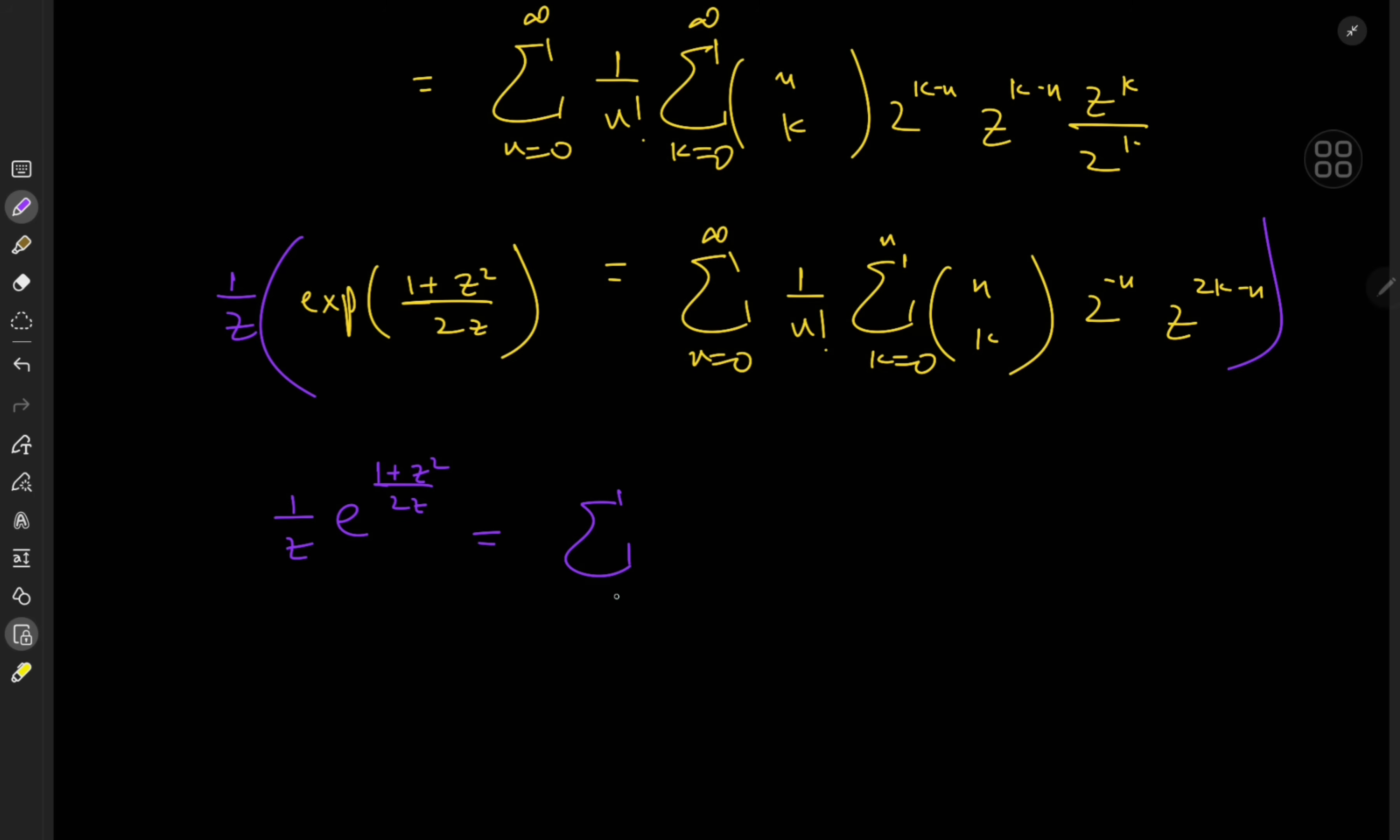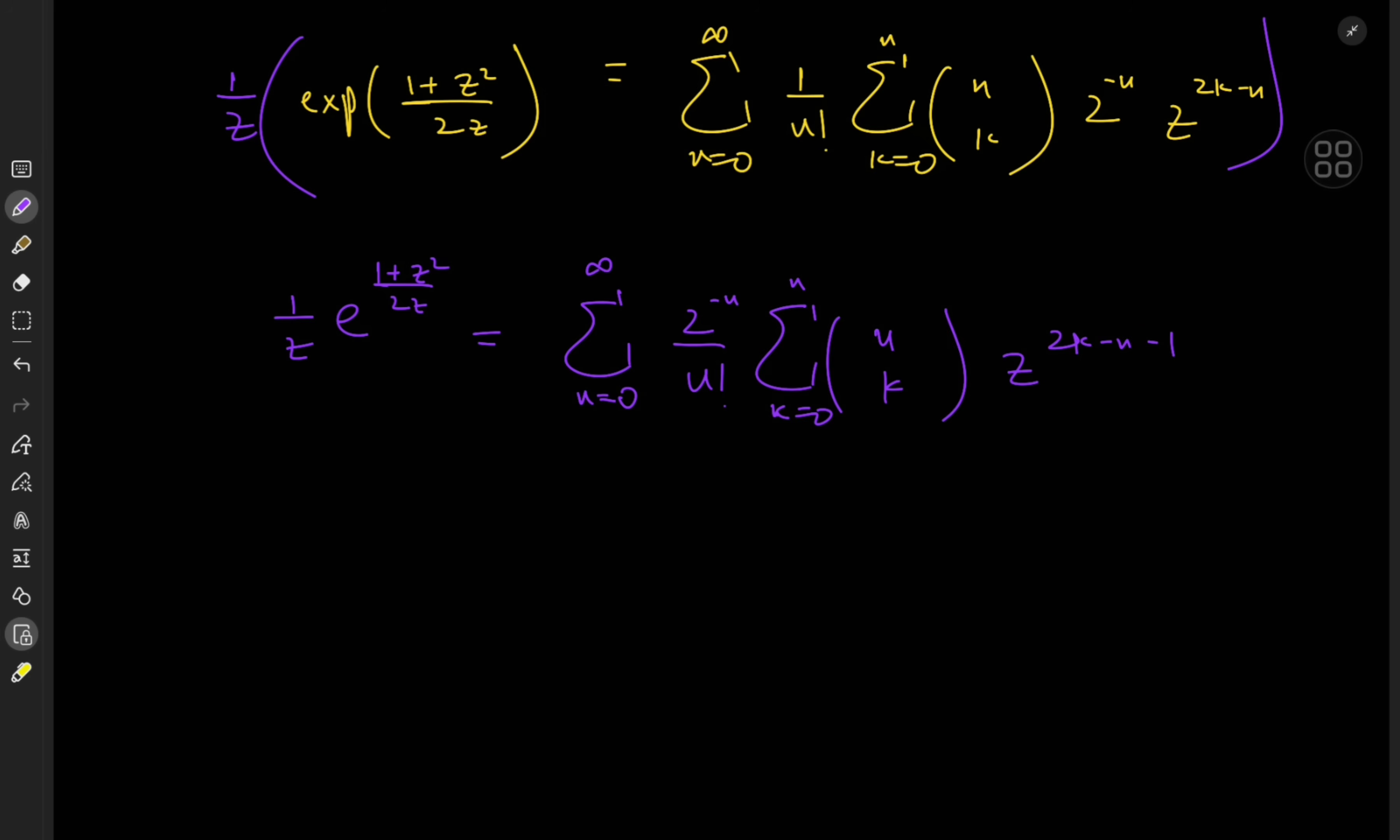So that we have (1/z)·e^((1 + z²)/(2z)). And this thing equals the sum over n from 0 to infinity of 1/n!, sum over k from 0 to n, n choose k, 2^(-n), which of course is independent of the index variable k, so we'll take it outside here. And we have z^(2k - n - 1). That was cool. And we started off with one exponential function in z times 1/z. And now we have this infinite series involving binomial coefficients, sums of them as well, and monomials in z. So we've gone from a relatively simple looking integrand to a much more complicated one, which, judging by the history of all the integrals we've done so far, is definitely progress.